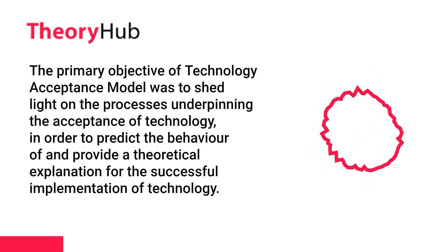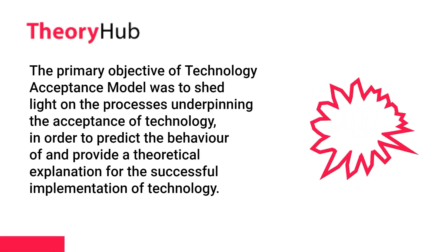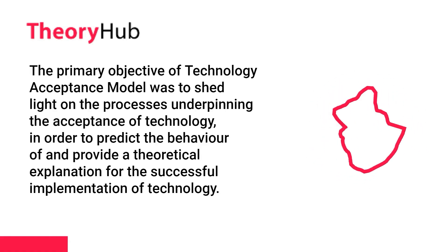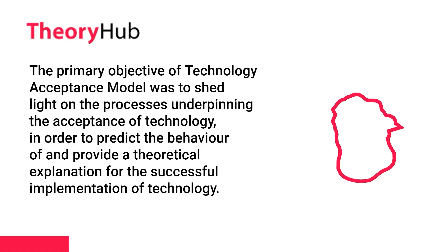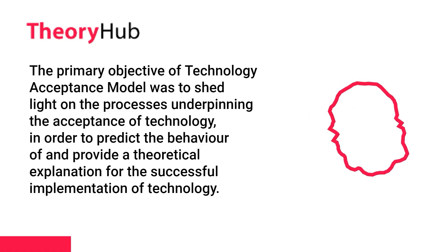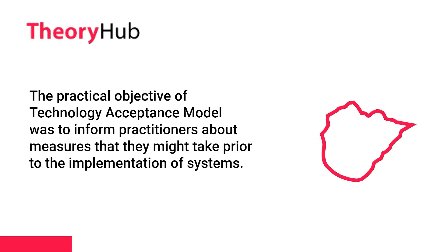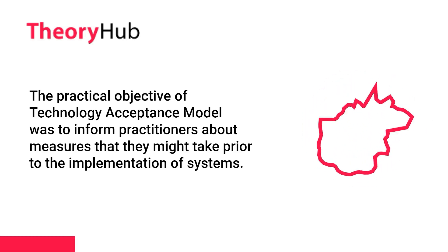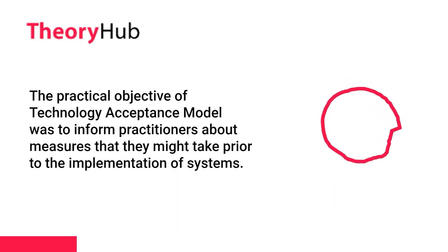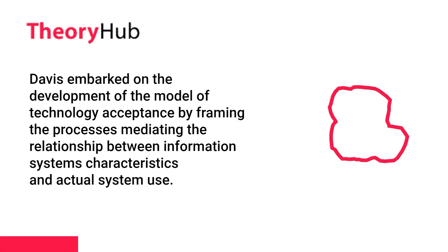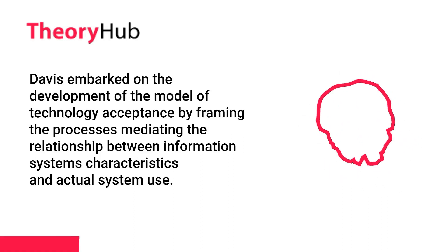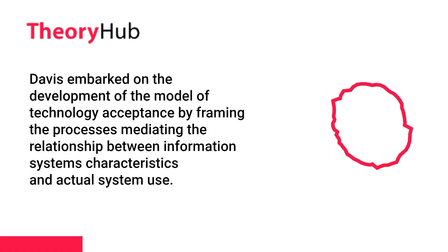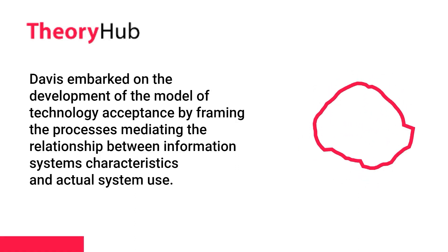The primary objective of the Technology Acceptance Model was to shed light on the processes underpinning the acceptance of technology, in order to predict behavior and provide a theoretical explanation for the successful implementation of technology. The practical objective was to inform practitioners about measures they might take prior to the implementation of systems. Davis embarked on developing the model by framing the processes mediating the relationship between information systems characteristics and actual system use.